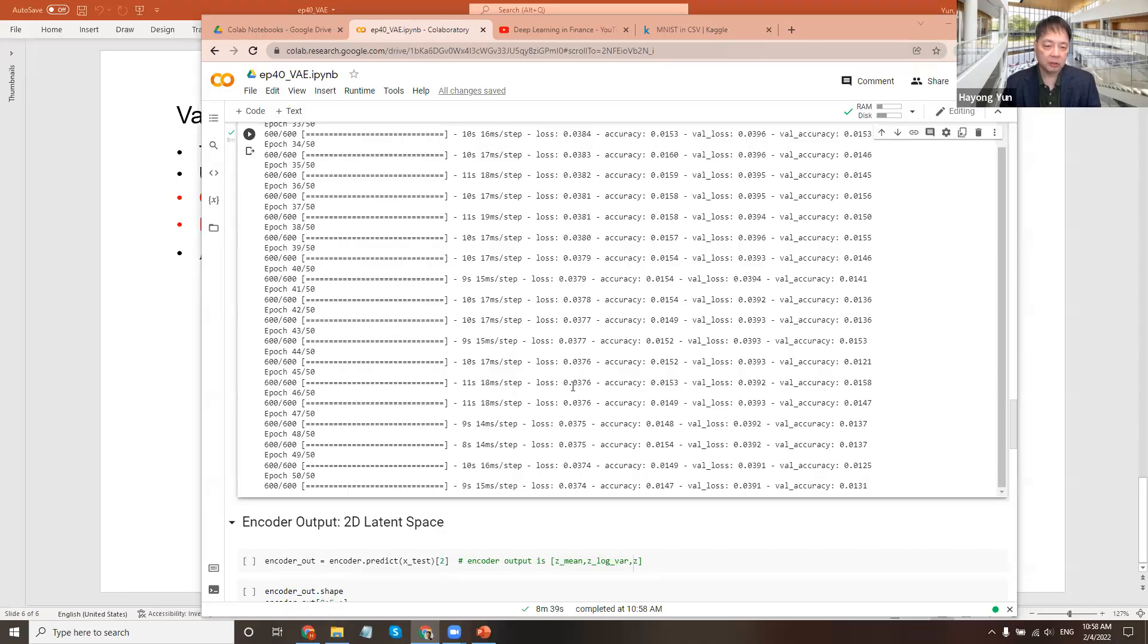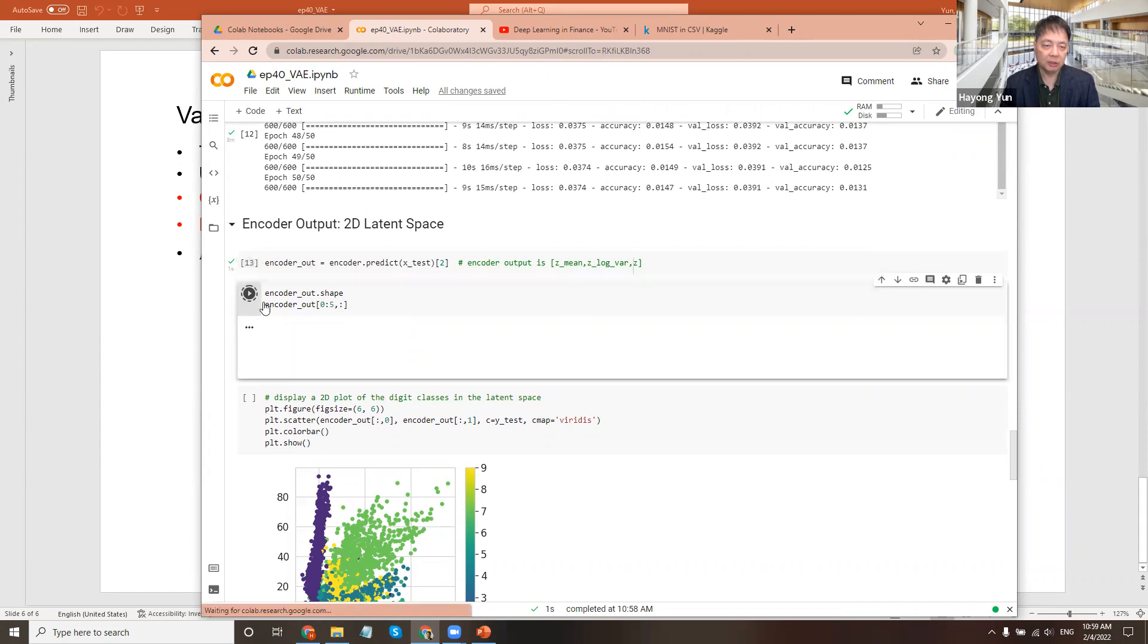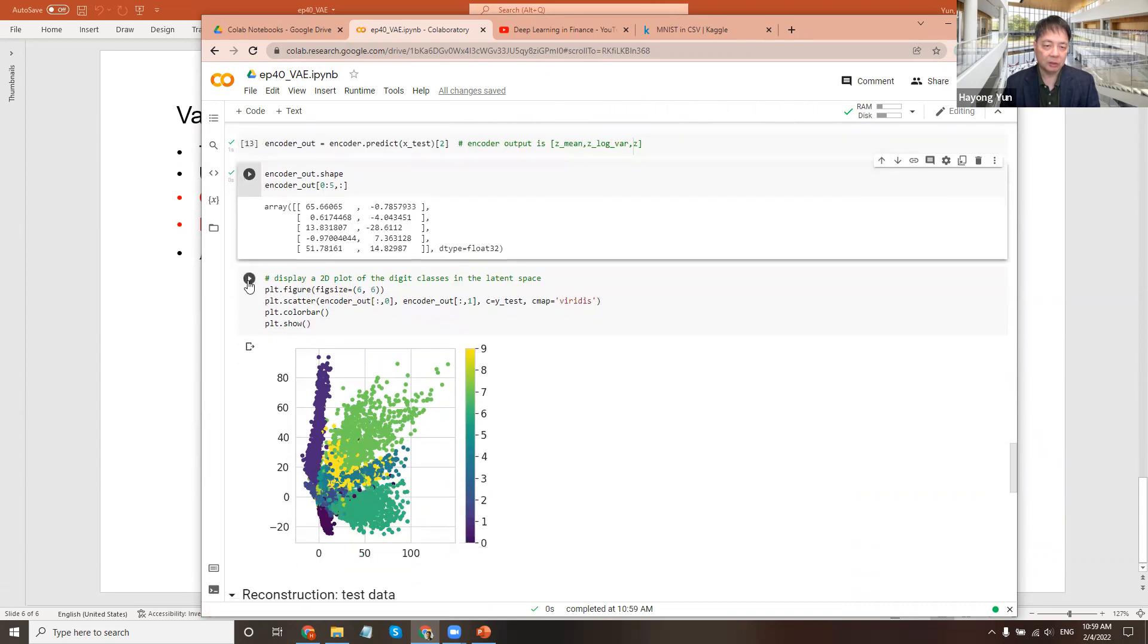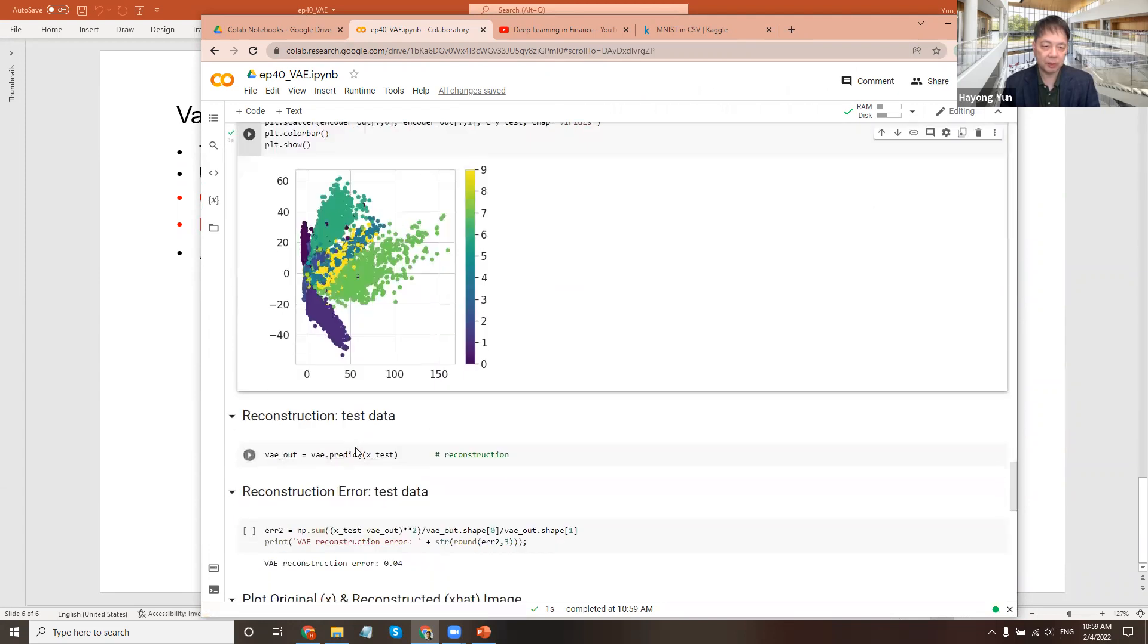It's done training. Let's see how the encoder output looks like from x_test, and again, the two for the z variable here. So in a plot, it looks like this here. You can see the similar digits, same digits, cluster in a similar place here.